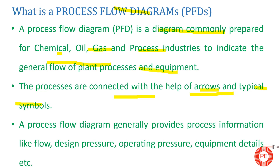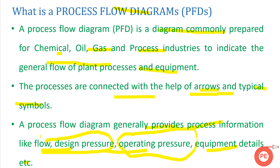A process flow diagram generally provides process information like flow, design pressure, operating pressure, equipment details, and temperature. Your design pressure, operating pressure, flow, and temperature will be there, and most importantly equipment details are also there. Additional information varies from designer to designer and from process to process, but flow, design pressure, operating pressure, temperature, and equipment details are the primary data present in each and every PFD.